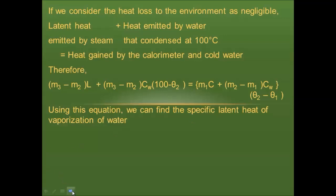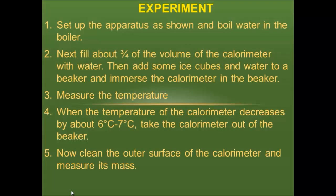For the experiment, set up the apparatus and boil water in the boiler. Fill about three-quarters of the calorimeter volume with water — not completely — because when steam condenses and adds to the water, the volume increases and must be accommodated. Then add some ice cubes and water to a beaker and immerse the calorimeter in it to cool it down. I'll explain why ice cubes are used in the important points section.